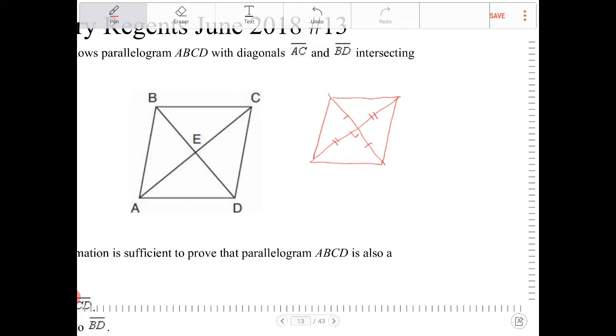The diagonals in a parallelogram already bisect each other, but in a rhombus not only do they bisect each other but they're also perpendicular.